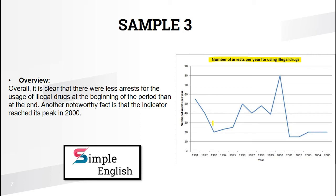The more complex the sentence, the better. For a single line graph, you can say either 'there were more arrests at the beginning than at the end' or 'there were fewer arrests at the beginning than at the end.' By comparing the beginning and the end, you are effectively communicating the trend of the graph.